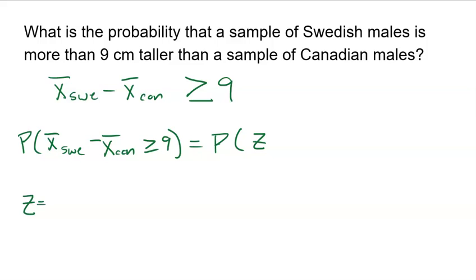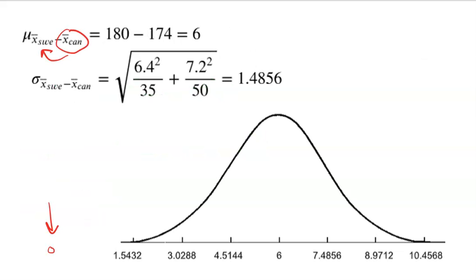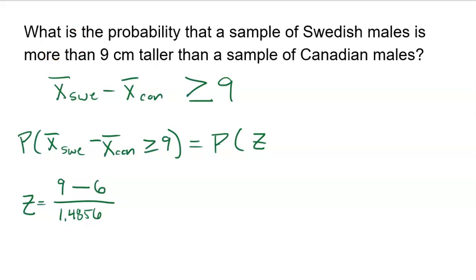The Z-score is going to be taking that difference of 9 minus the difference of 6. That was the mean, that was what I expected. Divided by the standard deviation of 1.4856. So I'm going to grab my calculator. Do the 9 minus 6 first, or you could even do that in your head and just say that's 3. Then divide 3 by 1.4856. And you get a Z-score of 2.0194, if you round it correctly.